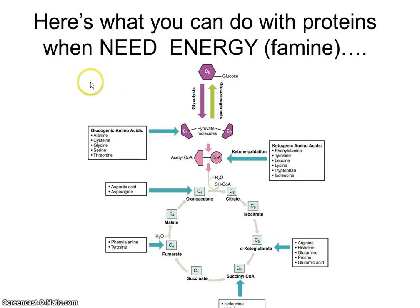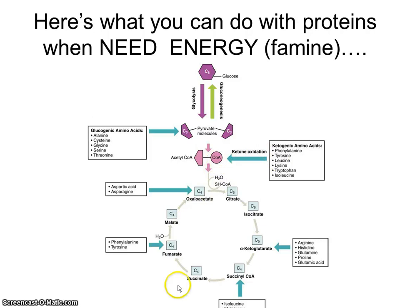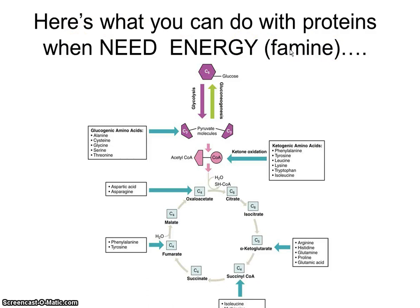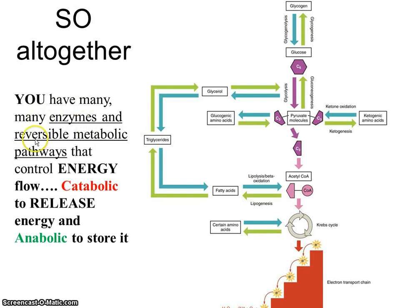When you need energy in the famine state, glucogenic amino acids can be converted to pyruvate and then used to synthesize new glucose, maintaining glucose levels. Other amino acids are made into ketone bodies, which can then be converted back to acetyl-CoA and used for energy. Some are converted to oxaloacetate, alpha-ketoglutarate, succinyl-CoA, or fumarate for use in the Krebs cycle. All 20 amino acids can contribute to your energy needs when in a famine state.